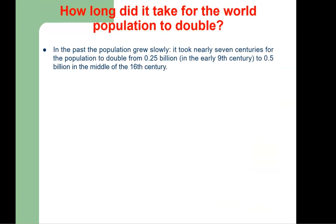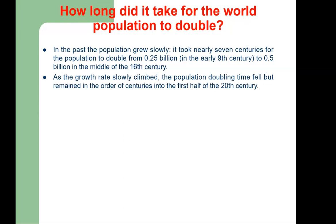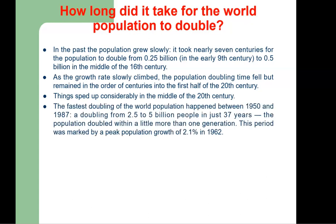A question is: how long did it take for the world population to double? In the past, the population grew slowly. It took nearly 7 centuries for the population to double from 0.25 billion in the early 9th century to 0.5 billion in the middle of the 16th century. As the growth rate slowly climbed, the doubling time fell but remained in the order of centuries into the first half of the 20th century. Things sped up considerably in the middle of the 20th century. The first doubling of the world population happened between 1950 and 1987 — a doubling from 2.5 to 5 billion people in just 37 years. The population doubled within a little more than one generation, marking a peak population growth of 2.1% in 1962.